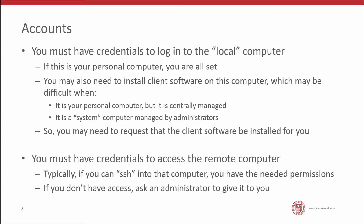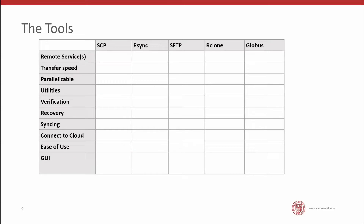Now let's get to the tools. I have a table we'll fill in as we go through the talk — the left side shows the priorities we discussed, and across the top are the five tools we'll cover: SCP, rsync, SFTP, rclone, and Globus. By the end, you'll be able to see which tools have which strengths.